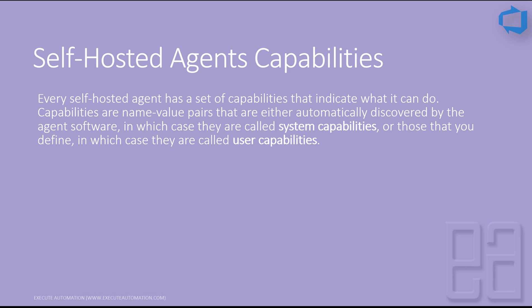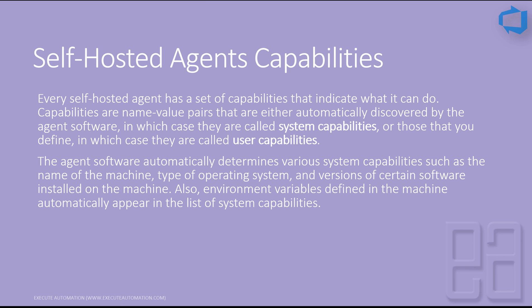You can define your own user capabilities for the agent, or by default the agent detects its capabilities automatically as system capabilities. The agent software automatically determines system capabilities such as the machine name, operating system type, versions of installed software, and environment variables defined on the machine.